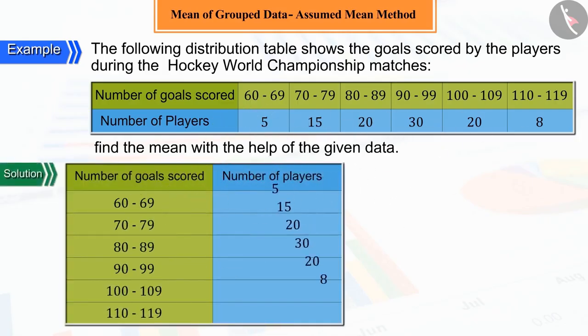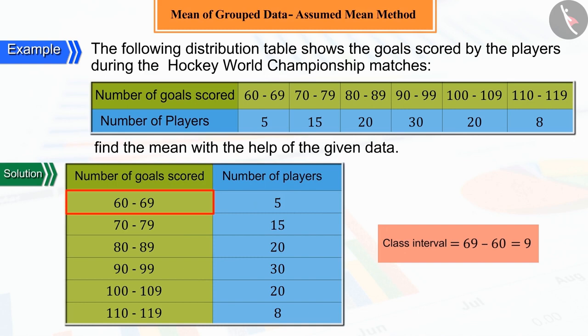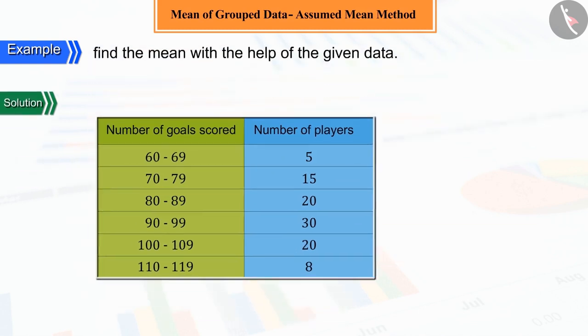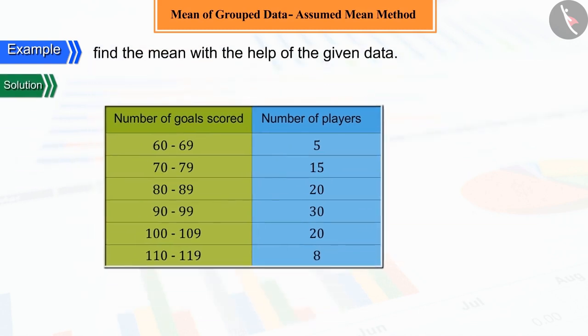The given distribution table is a system of grouped data, where the size of the class interval is 9. We know that for mean, we need the class mark of these class intervals or midpoints.